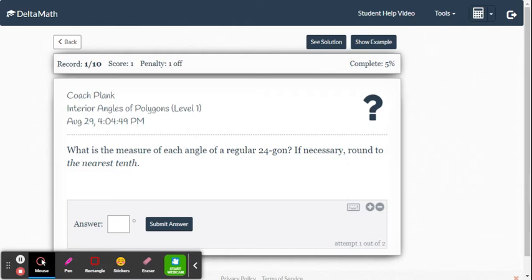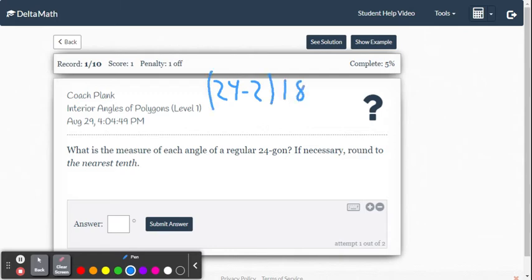So 24-gon, it means all angles are exactly the same measure. So we're going to do 24 minus 2, and then we're going to multiply that by 180. And that's going to give us the sum of the interior angles. But then we have to divide by how many of those angles we have. And since it's regular, we know it has 24 angles that are all the same. So we can just divide by 24.